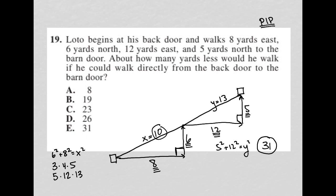So the distance from door to door is 10 plus 13, which is 23 yards, which means that the difference between the 31 and the 23 must be 8 yards. So how many yards less would he walk? He'd walk 8 yards less.